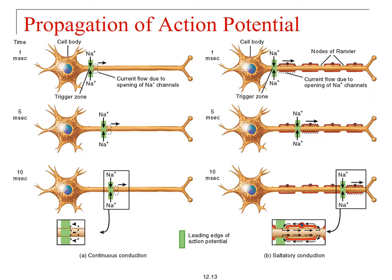We're going to look at propagation of an action potential in both continuous conduction and saltatory conduction. It might be a good idea to revisit the action potential propagation video from test three. On the left, we've got continuous conduction, which happens in unmyelinated neurons — neurons with no oligodendrocytes, no Schwann cells, no nodes of Ranvier, just a continuous axon going from the trigger zone, the axon hillock, all the way down to the axon terminals.